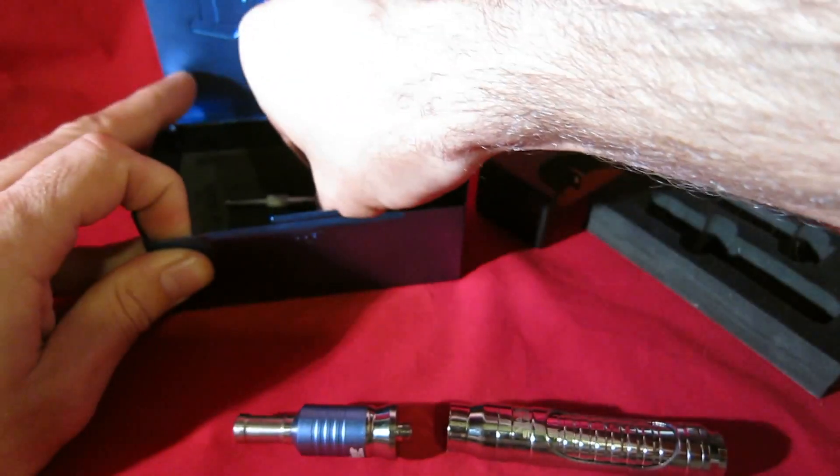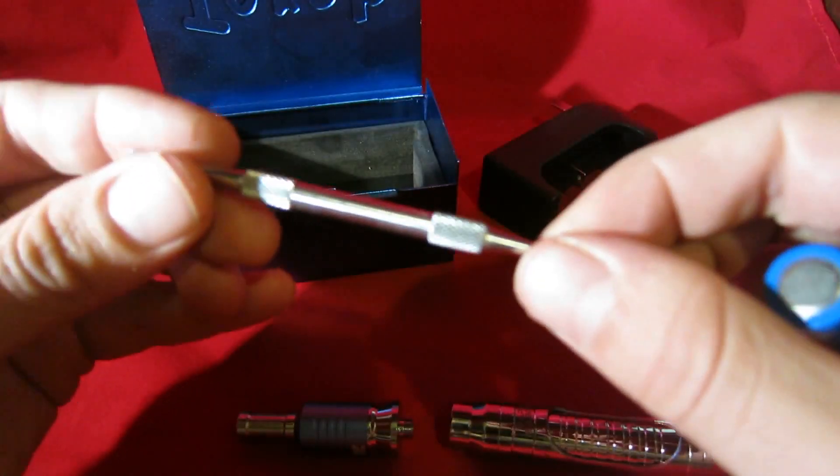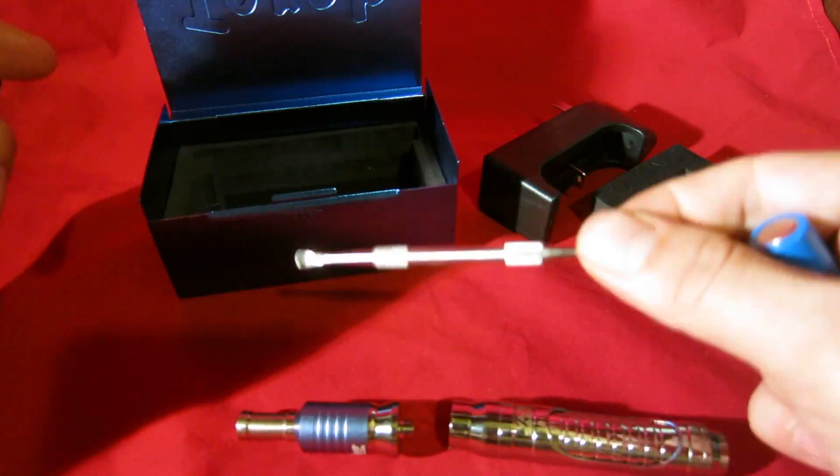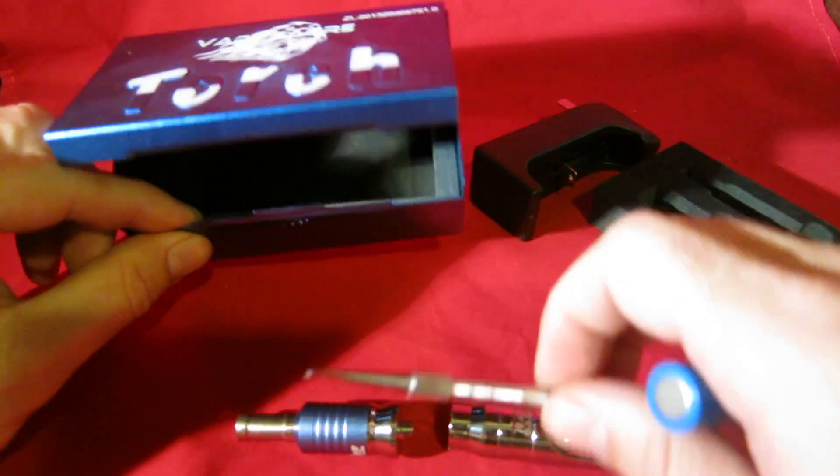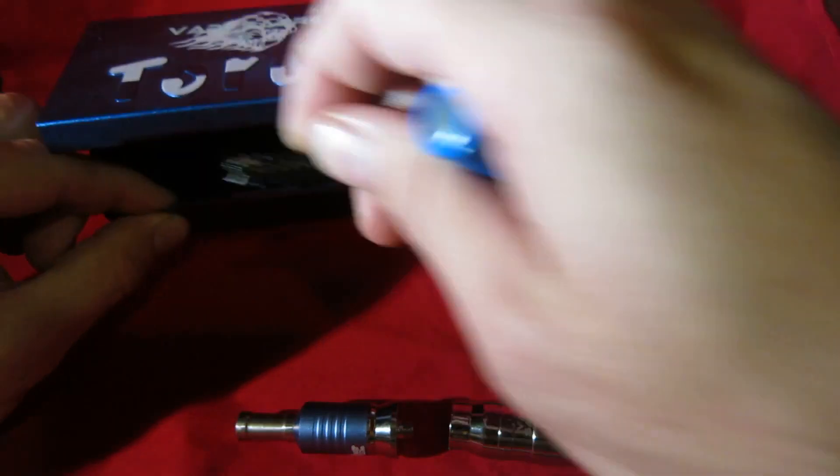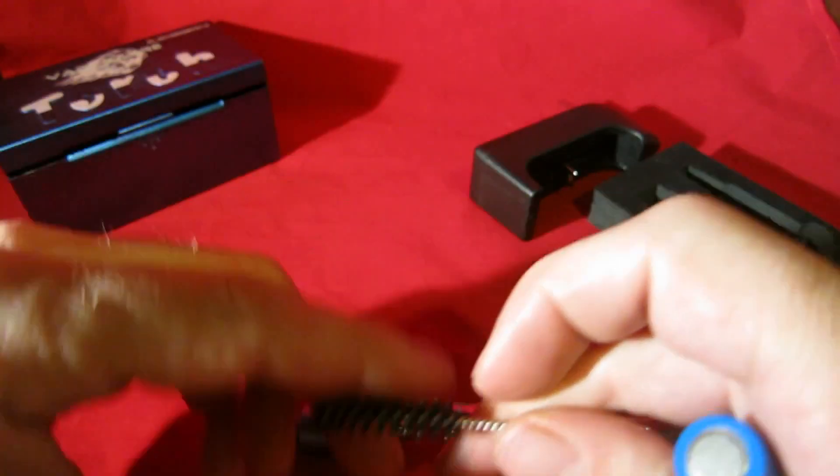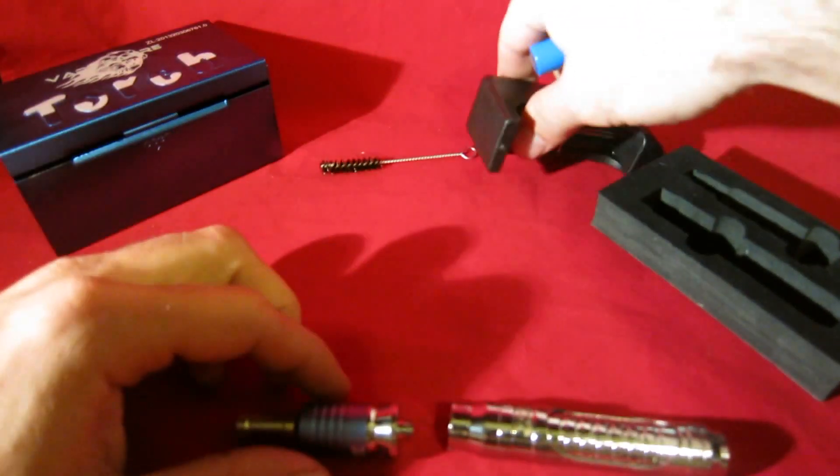And you also get this dabber tool right here. This is kind of a heavy duty dabber tool. It's not like a little rinky-dink one. You get that. And you also get a cleaning brush right here. Okay. So here's all the parts.